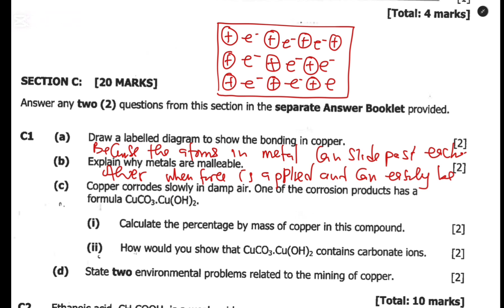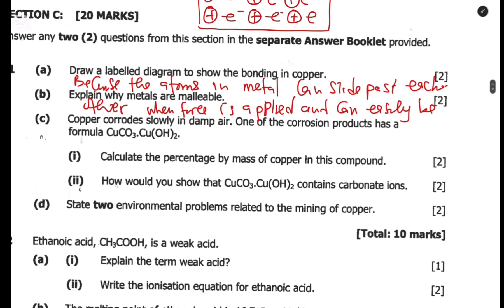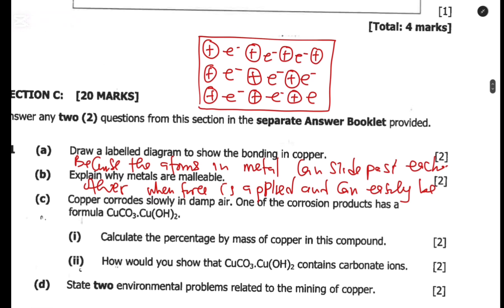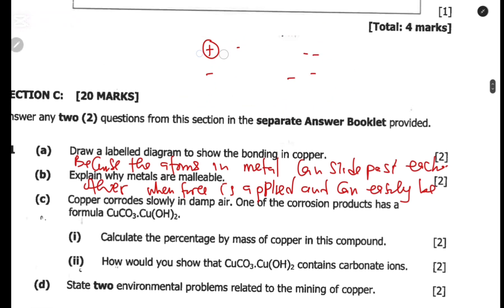For C1c: copper corrodes slowly in damp air. One of the corrosion products has a given formula. You are asked to calculate the percentage by mass of copper in that compound.